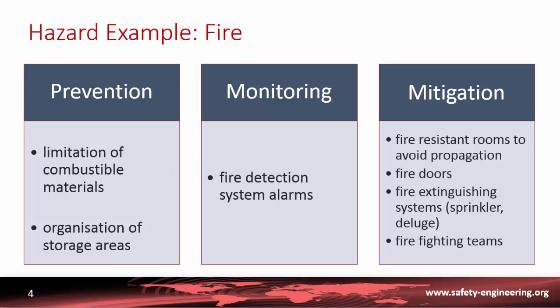The first level is through prevention. A way of preventing fire is to limit the amount of combustible materials, especially during the period where the reactor is shut down and there is a lot of maintenance being done. It is important to organize a storage area in order to avoid accumulation of waste or any combustible material. The second level is through monitoring.